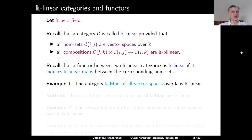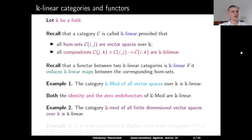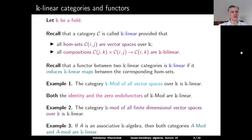Example 1: The category of all vector spaces over k is a k-linear category, and both the identity endofunctor and the zero endofunctor of this category are k-linear functors. Example 2: The category of all finite-dimensional vector spaces over k is also a k-linear category. Example 3: If A is an associative k-algebra, then both the category of all A-modules and all finite-dimensional A-modules are k-linear.